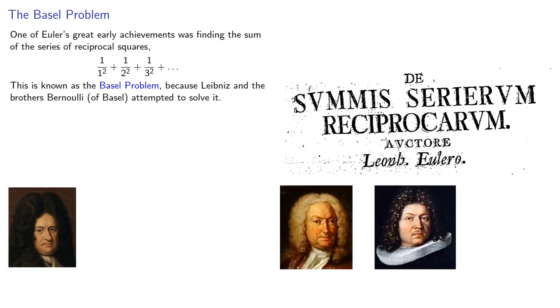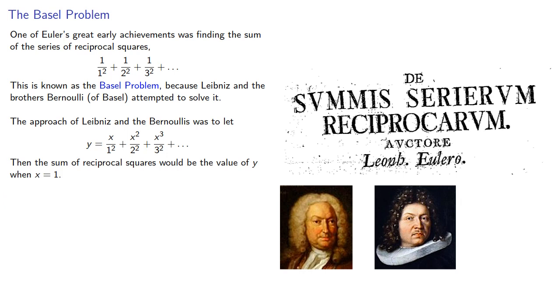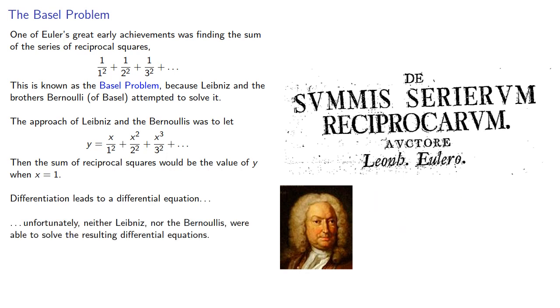The approach of Leibniz and the Bernoullis was to let y equal the power series, then the sum of the reciprocal squares would be the value of y when x is equal to 1. Differentiation leads to a differential equation. Unfortunately, neither Leibniz nor Bernoullis were able to solve the resulting differential equation.